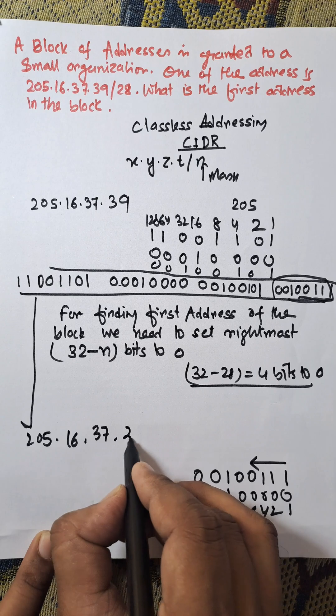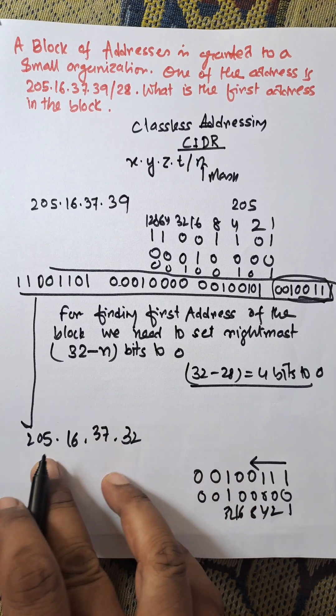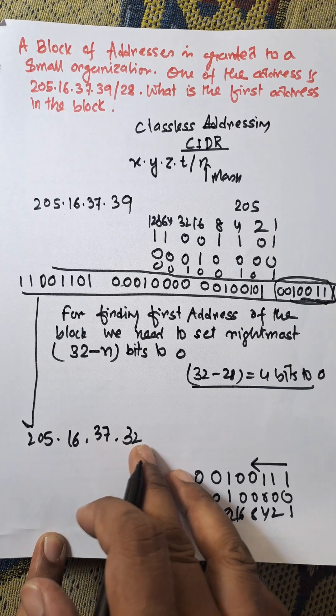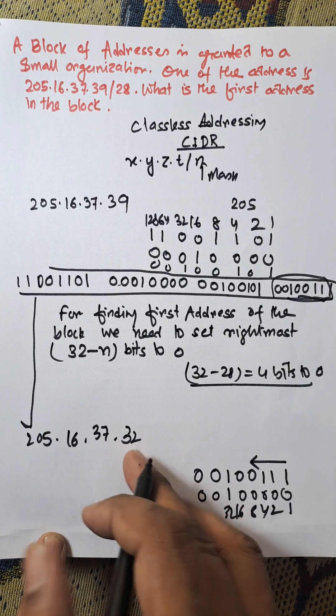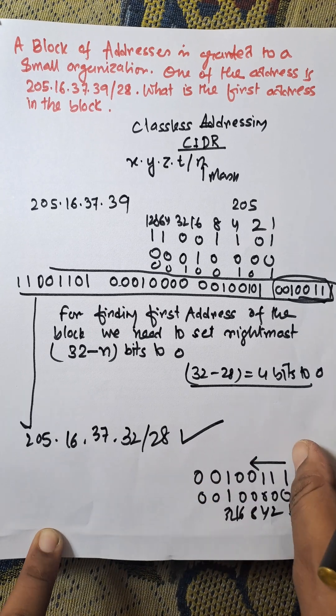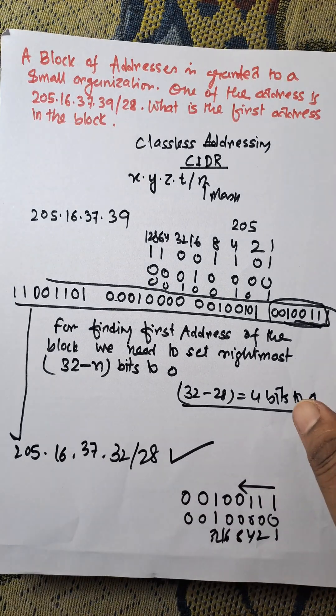And now the equivalent decimal number is 32. So the first address of the block is 205.16.37.32 slash 28. So this is the concept of first address in the block.